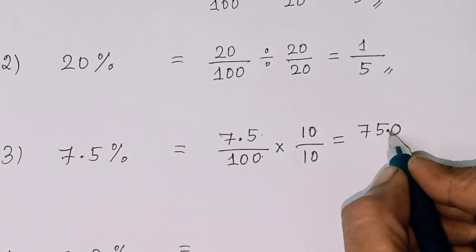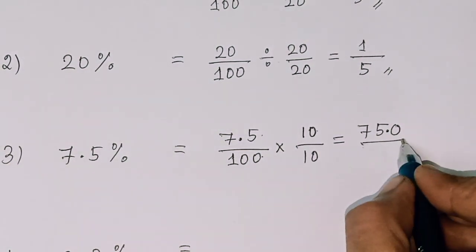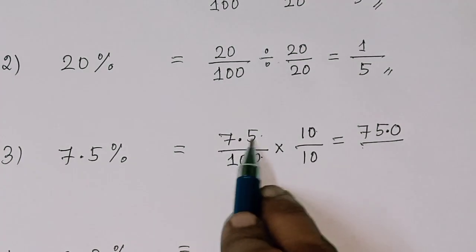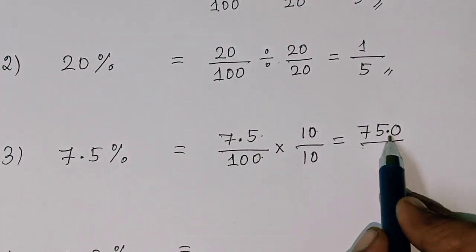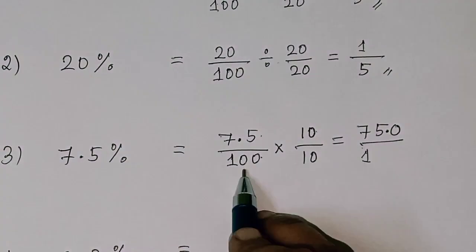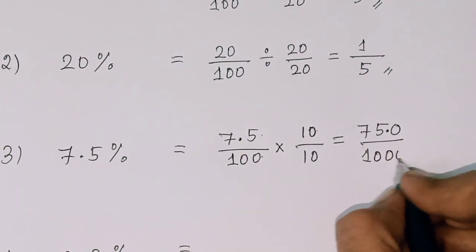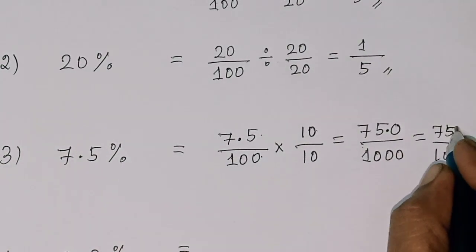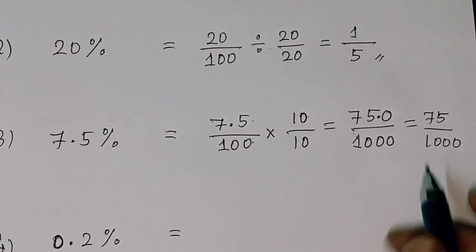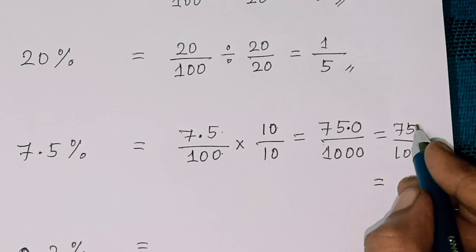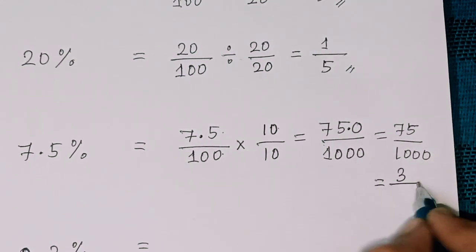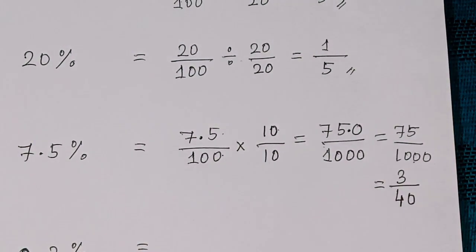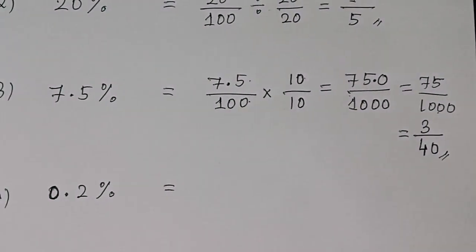So 1 decimal digit, multiply by 10. 75 divided by 1000. Now divide both by 25: 75 divided by 25 is 3, and 1000 divided by 25 is 40. So 3 by 40 — this is the answer. Fourth one: 0.2 percent.